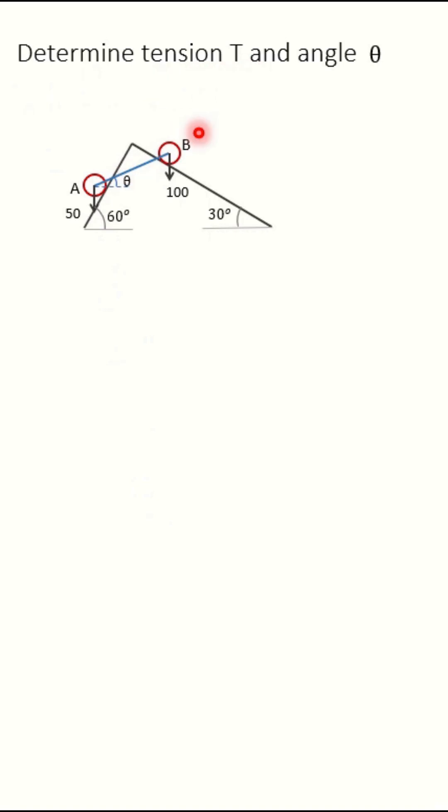Determine tension T in this string and angle theta. Draw free body diagram of this roller B. Weight 100 N downward direction. Tension T in this string at an angle of theta.